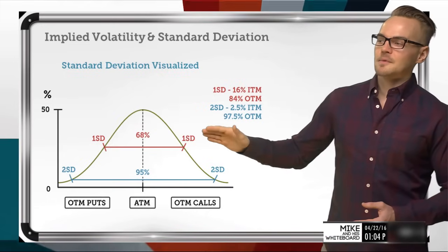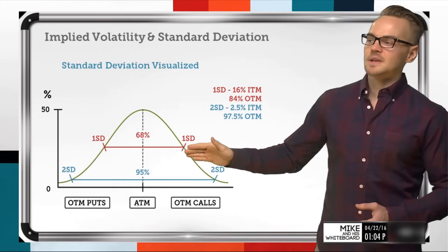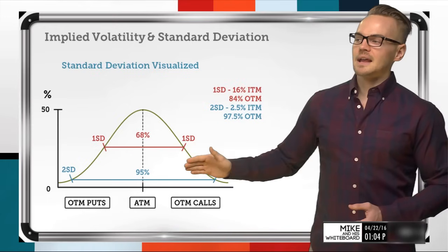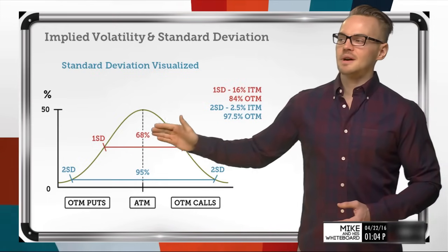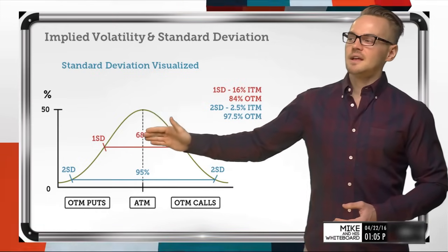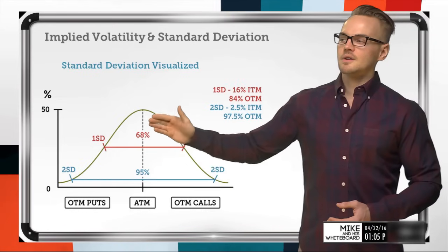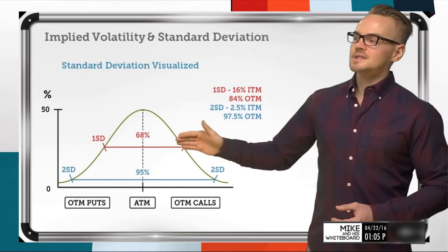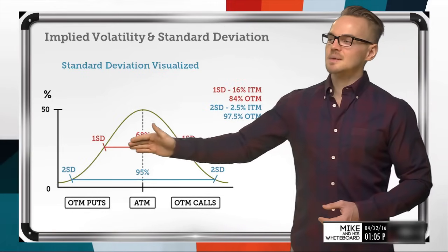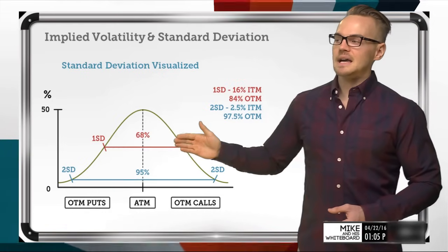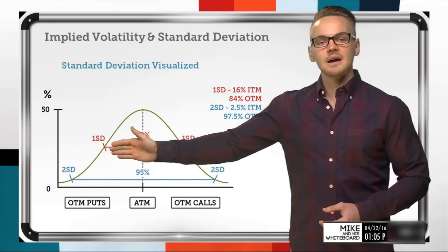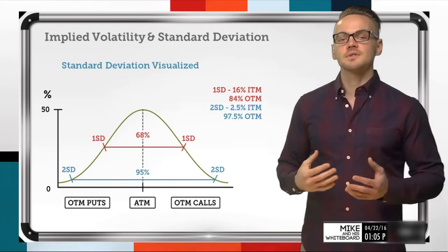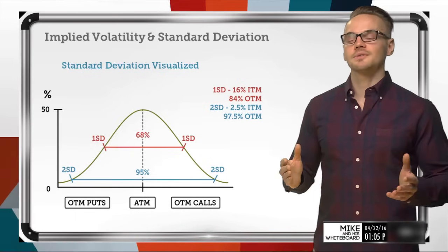Like we were talking about before, one standard deviation is going to capture about 68% of the occurrences that have deviated from this mean price. I want you to visualize the very middle of this bell curve graph as the mean price of the underlying. One standard deviation captures 68% of the movements outside of that mean, regardless of whether it was to the downside or the upside, and shows where that range would fall.